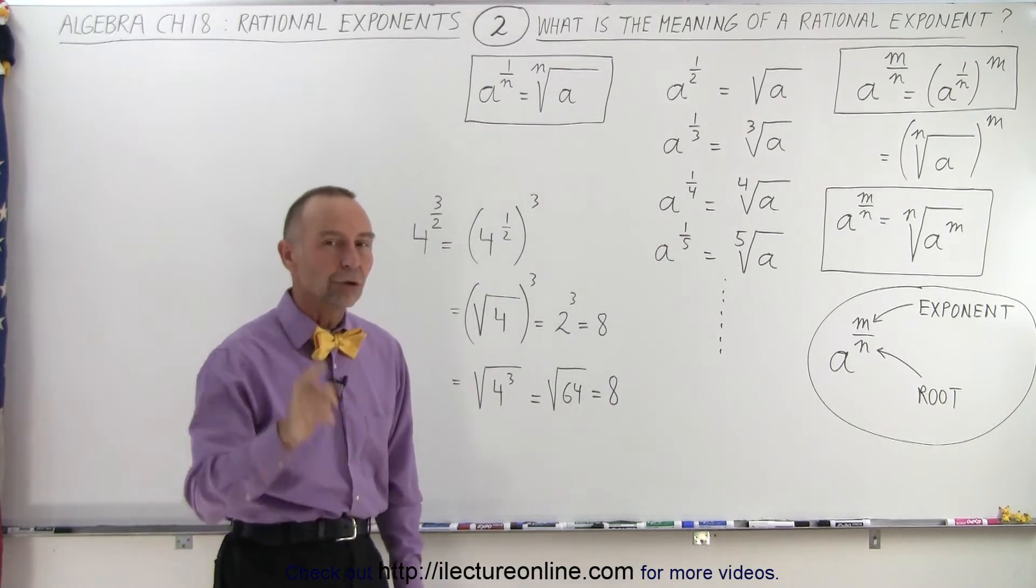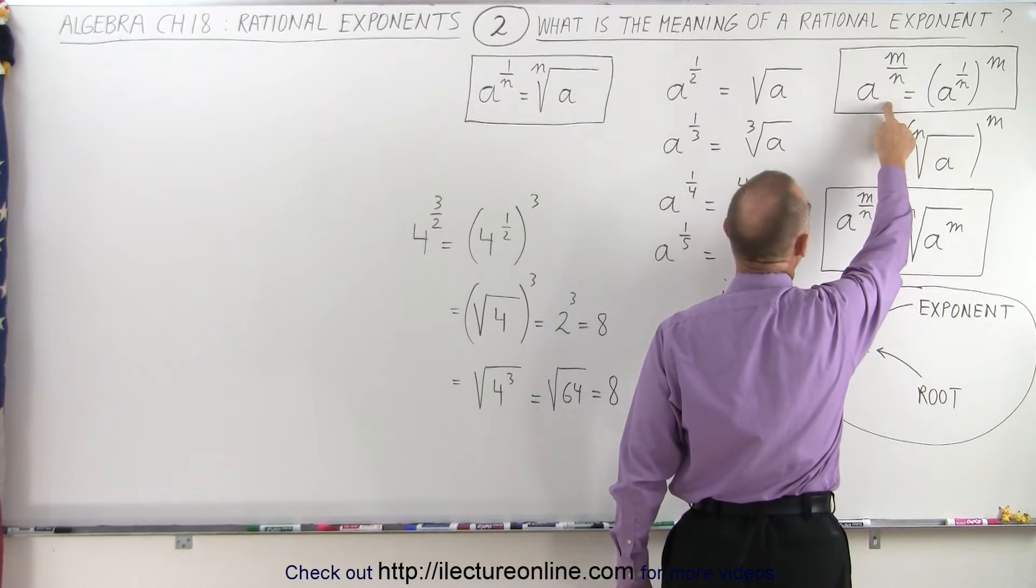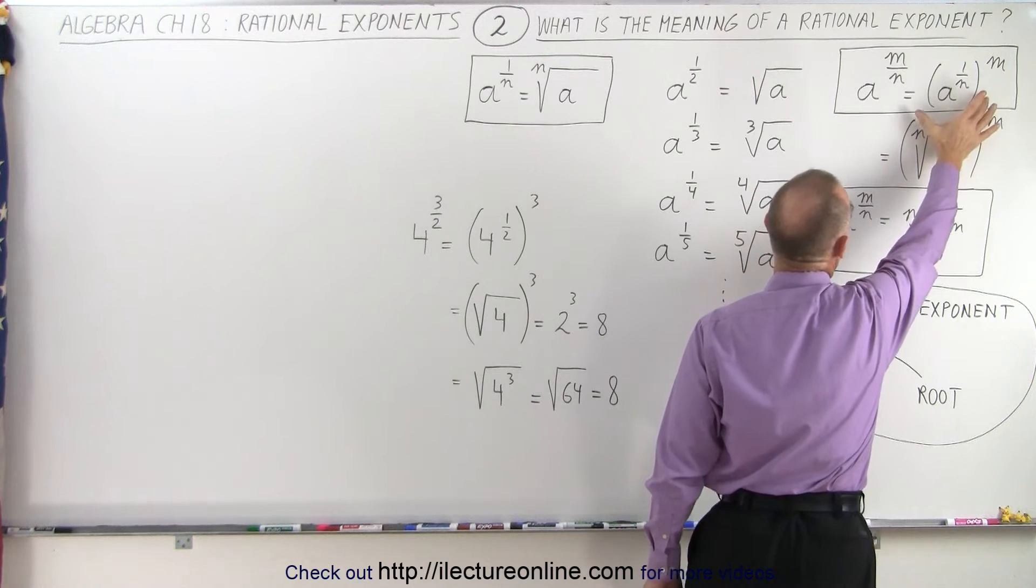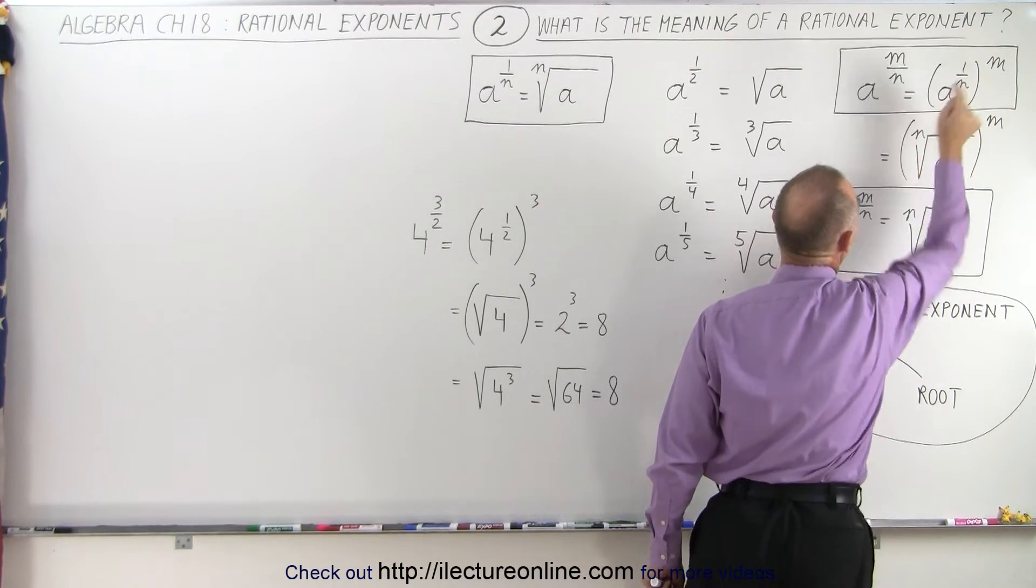But what about the number in the numerator? For example, if we have a to the m over n. Well, m can be written like this. We have a to the 1 over n raised to the m power.